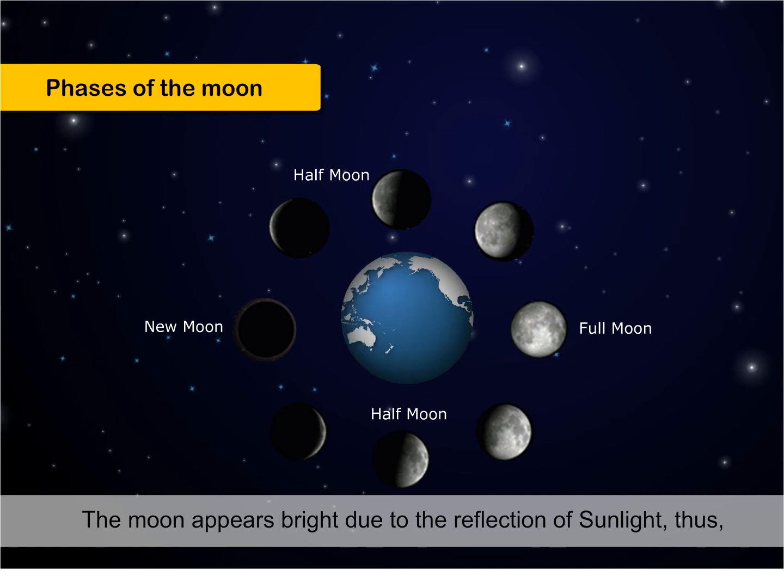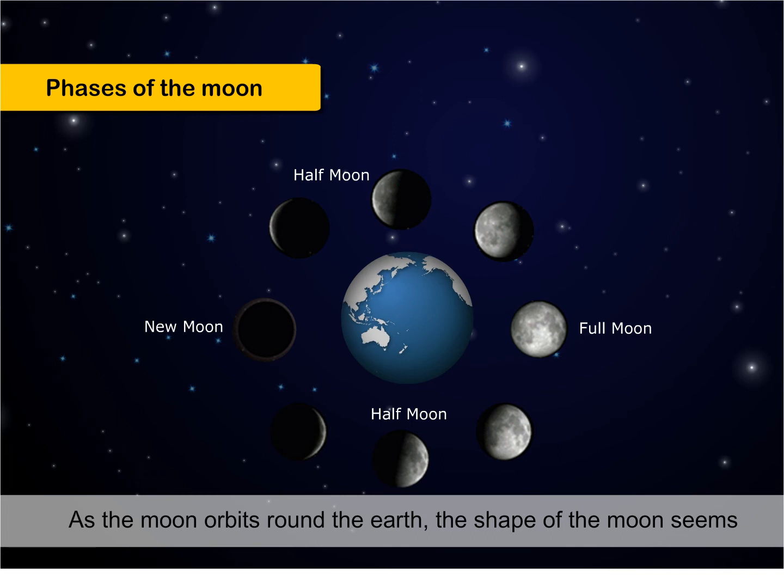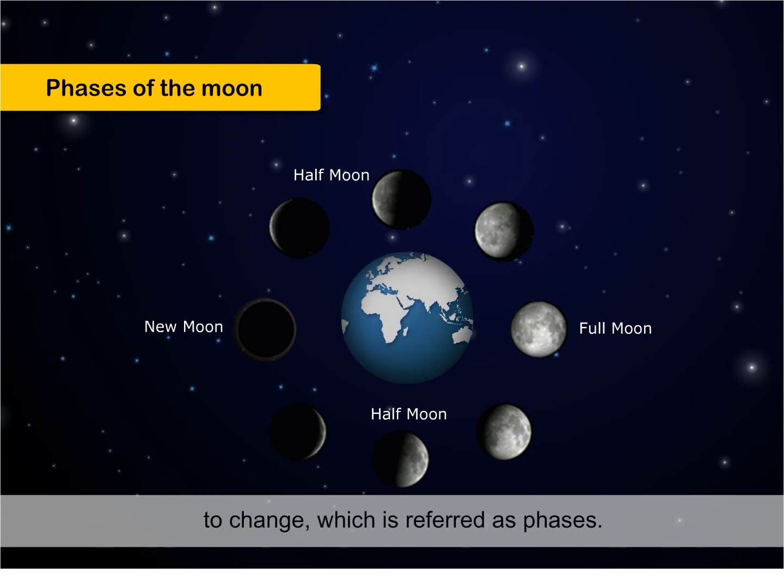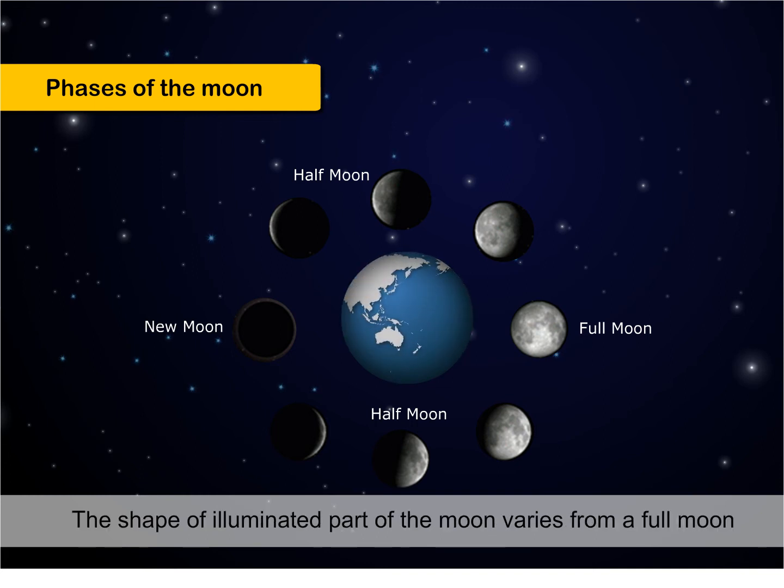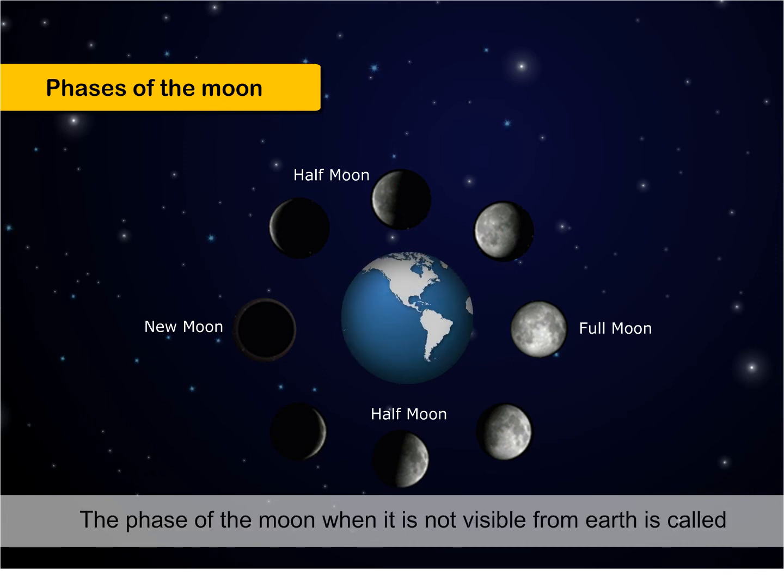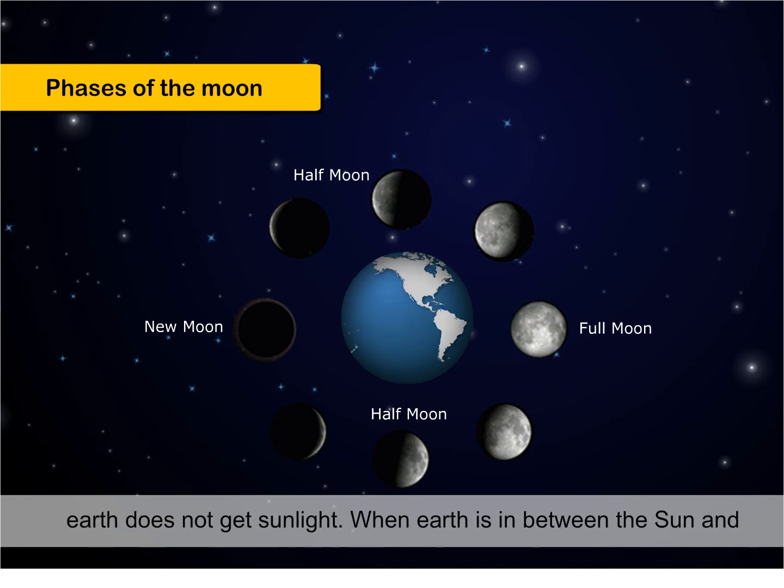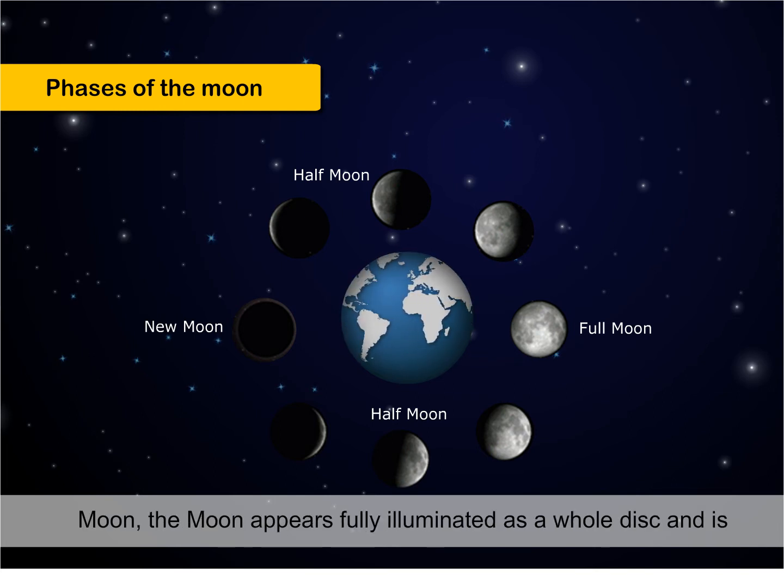The moon appears bright due to the reflection of sunlight. Thus, only half of the moon facing towards the sun is illuminated. As the moon orbits around the Earth, the shape of the moon seems to change, which is referred to as phases. The shape of illuminated part of the moon varies from a full moon to a new moon. The face of the moon, when it is not visible from Earth, is called new moon. This is because the side of the moon facing the Earth does not get sunlight. When Earth is in between the sun and moon, the moon appears fully illuminated as a whole disk and is called the full moon.